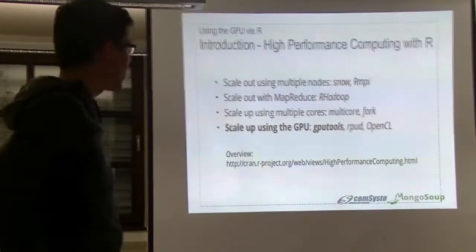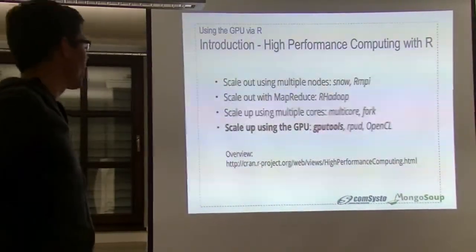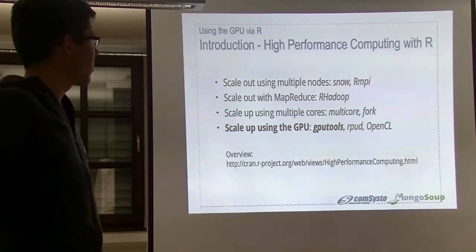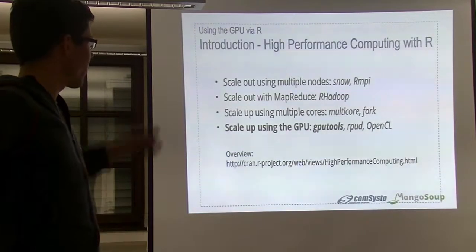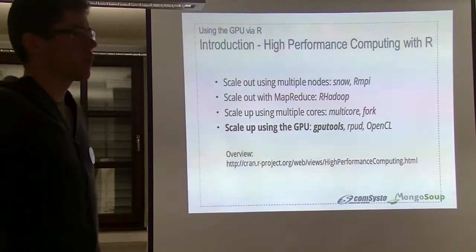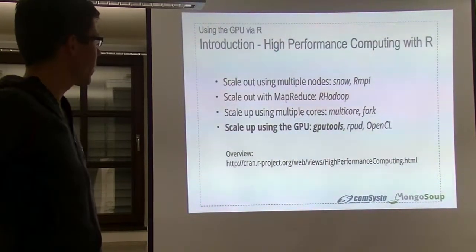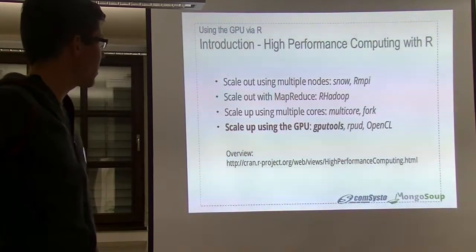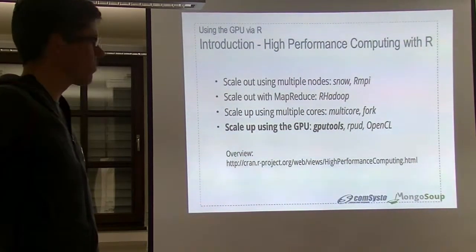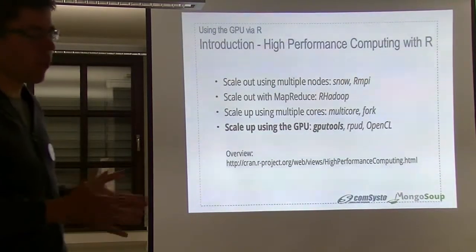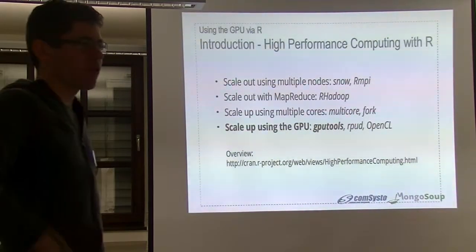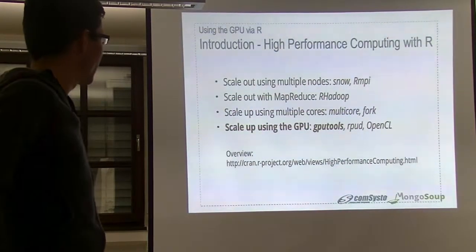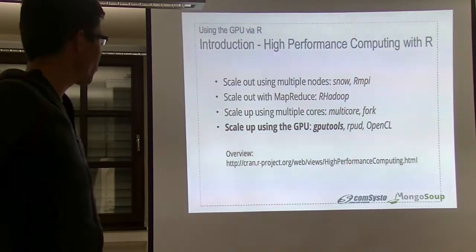There are several packages you can use to improve performance using multiple jobs in a private network, like Snow or FR-MPI. This is maybe the old way. Now we have Hadoop and you can use it with R-Hadoop and MapReduce jobs.